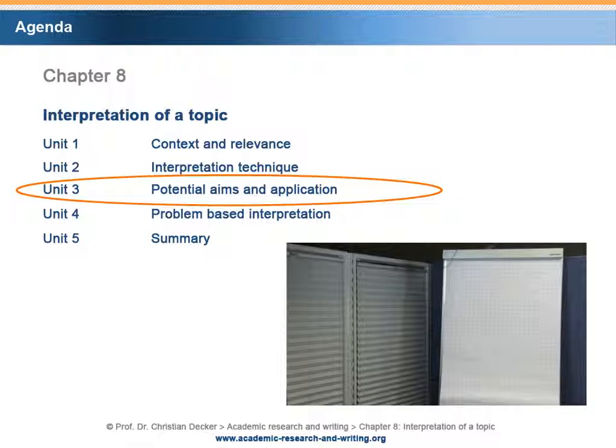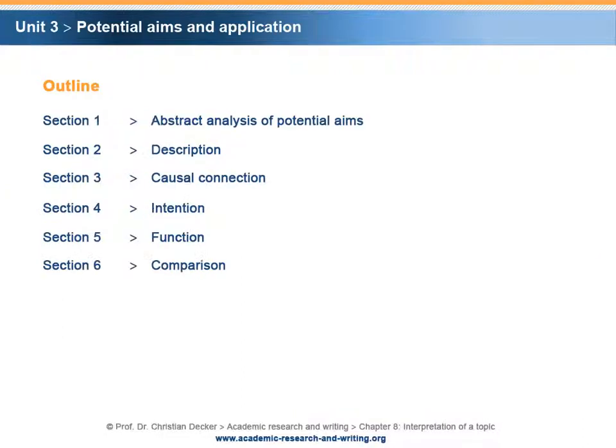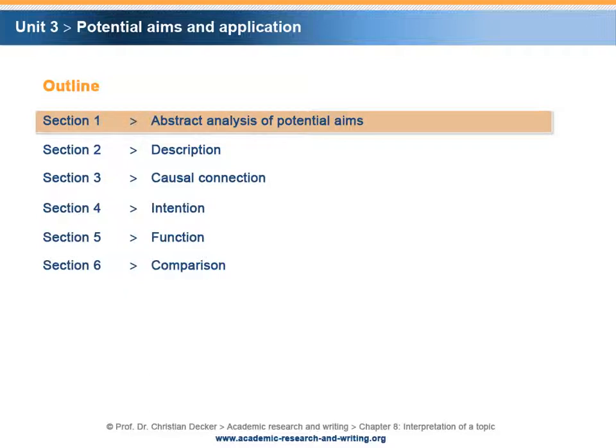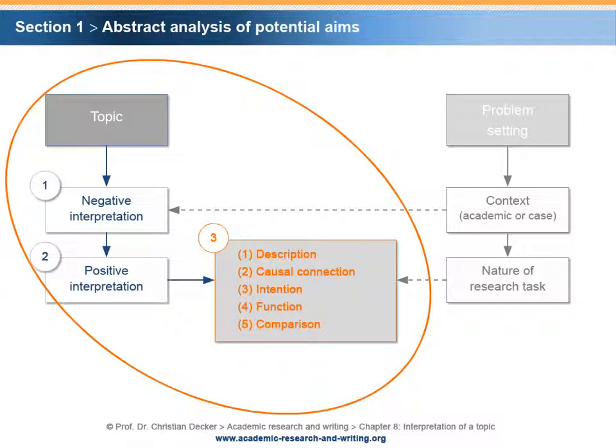In Unit 3, we will familiarize ourselves with potential aims and application. This unit is divided into six sections. Section 1 is the abstract analysis of potential aims. Before we start to have a look at the problem-based interpretation in Unit 4, the focus is on the abstract analysis of potential aims. The five potential aims — Description, Causal Connection, Intention, Function, and Comparison — are explained from a theoretical perspective.